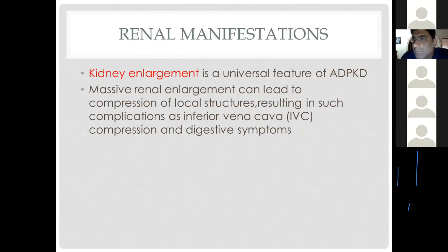Renal manifestations of ADPKD include kidney enlargement due to growth of multiple cysts. Normal kidney size is 9–12 cm, but in polycystic kidney disease kidneys can reach up to 16 cm. This enlargement causes compression of surrounding structures, producing symptoms depending on which organ is compressed.